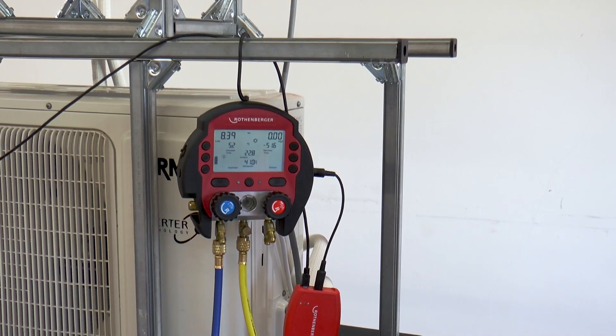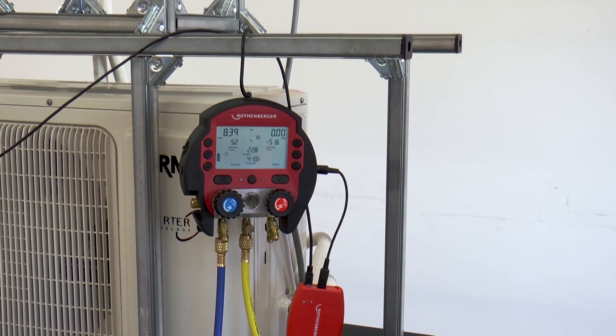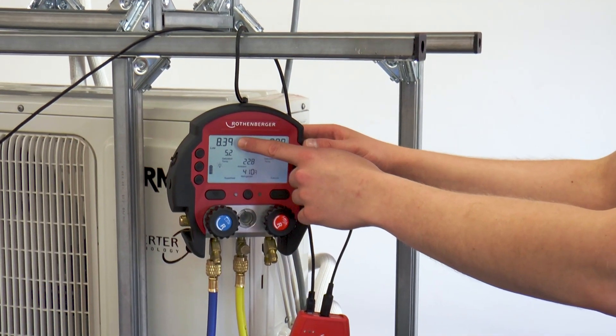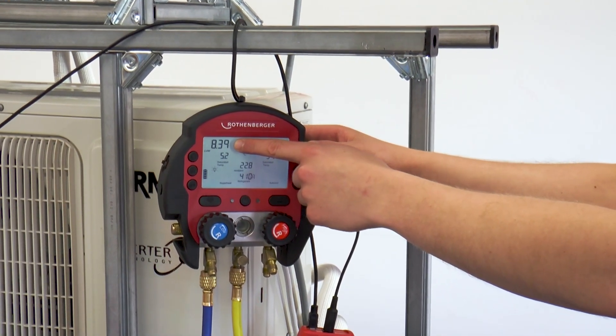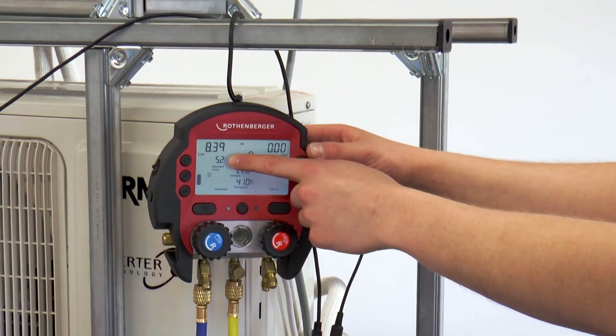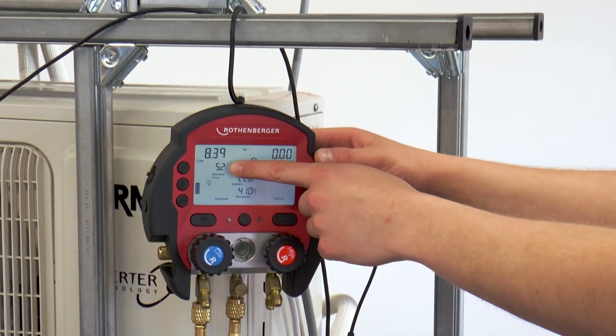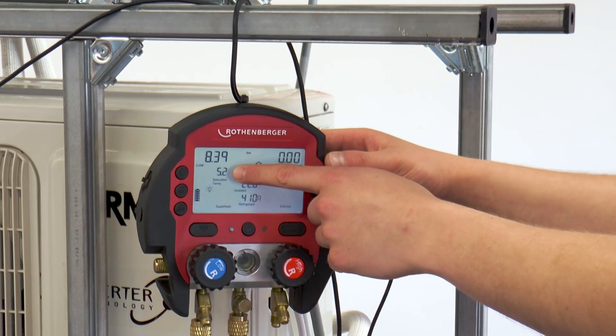After this load test, the leak test is performed. How is the working pressure selected? From the air conditioning application, it is known that temperatures on the low pressure side of zero to approximately plus 10 degrees Celsius are to be expected.